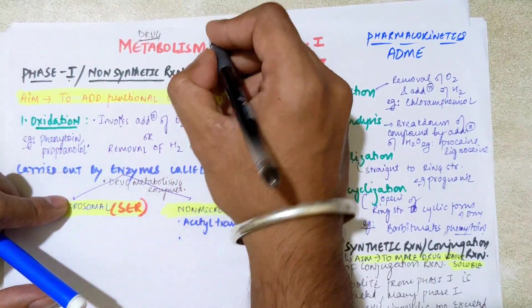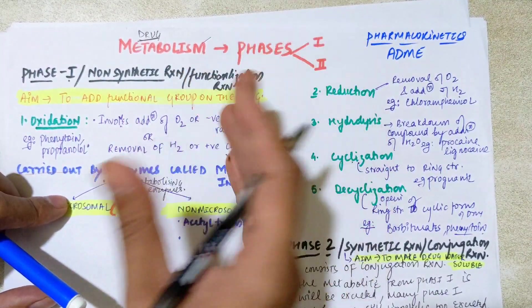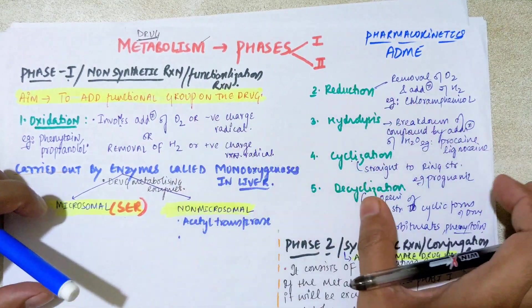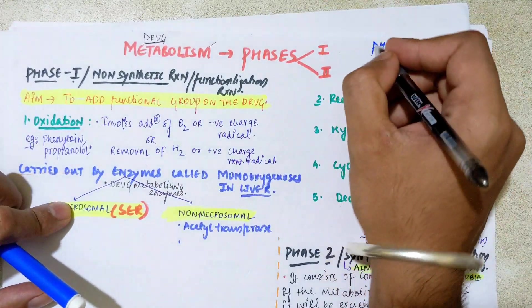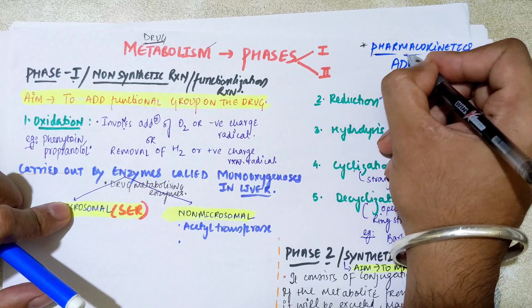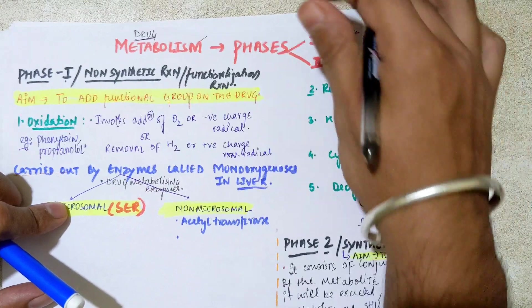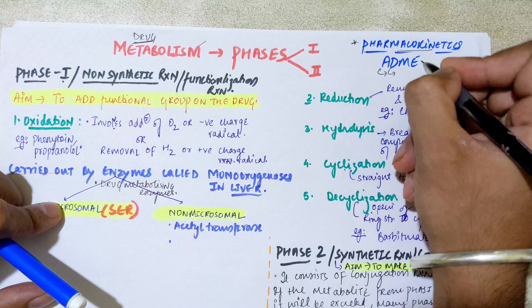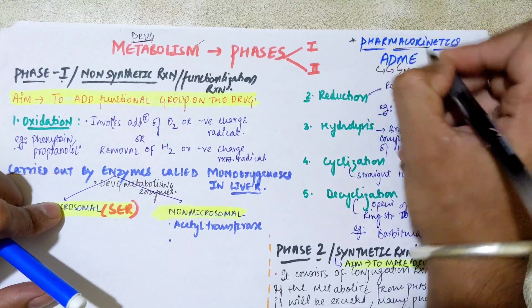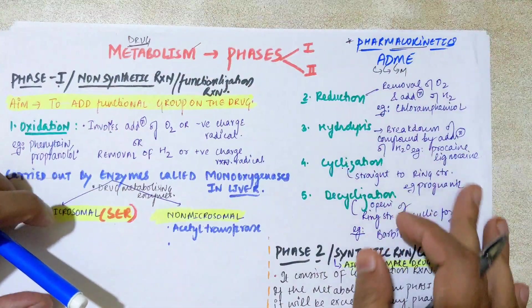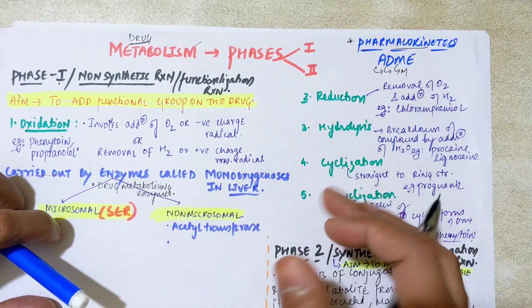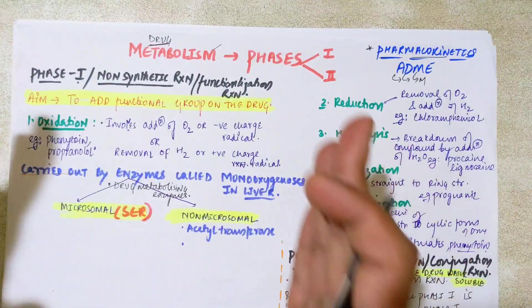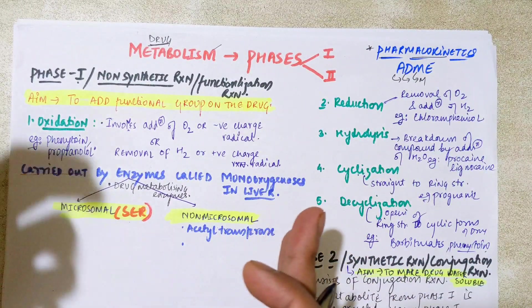If you have not watched the previous video on metabolism part one, watch that first and then come to the phases of metabolism. We are in the section of pharmacokinetics — from the first video covering absorption and distribution of the drug. Now we are here in metabolism, and the next video will be on clearance or excretion of the drug.